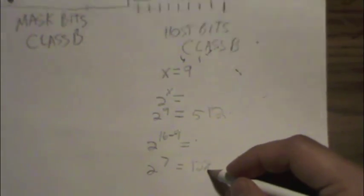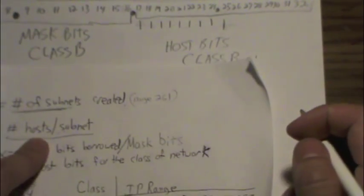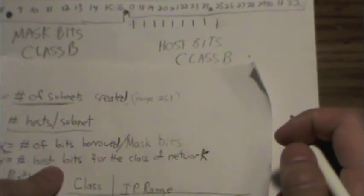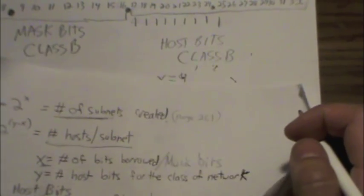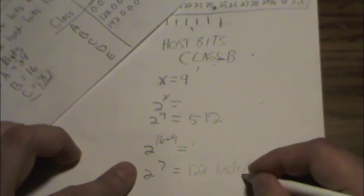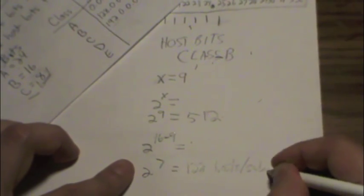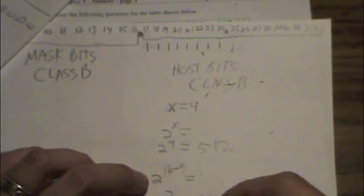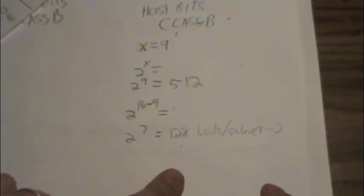So what does 128 represent? 128 represents the number of hosts per subnet. Of course, we subtract the 2 to get the number of usable hosts. So that should give us 126.